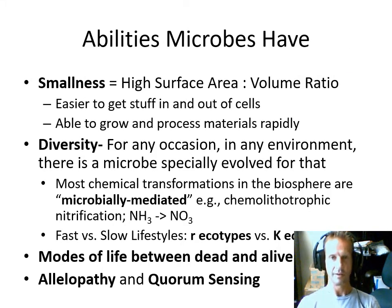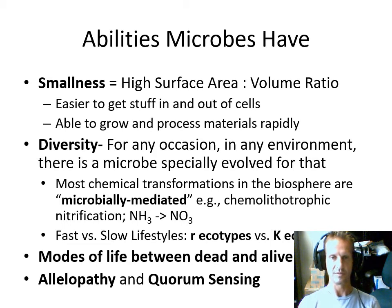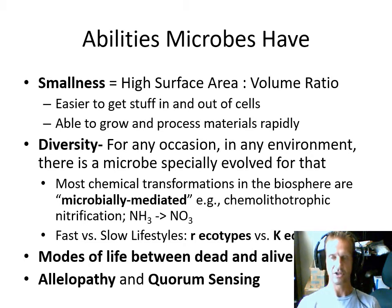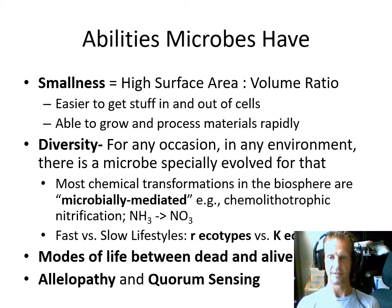Being small gives microbes a high surface area to volume ratio. For organisms that need to directly absorb or release materials from their bodies into the water, having a lot of surface area in contact with the water is really important. Microorganisms have a very high surface area to volume ratio, making it easy to transport materials into and out of their cells without complex organ systems. This gives them the ability to grow and process materials rapidly — doubling populations in hours — allowing them to respond rapidly to environmental conditions.